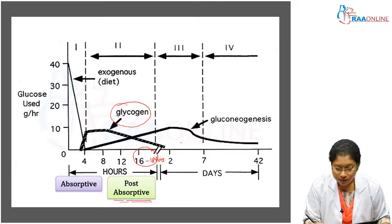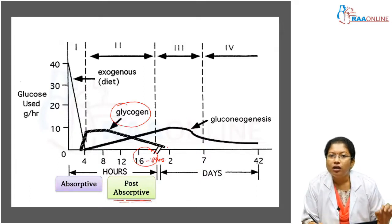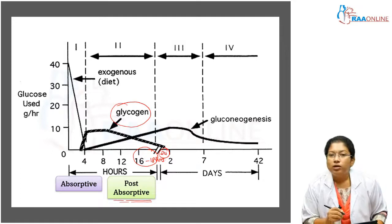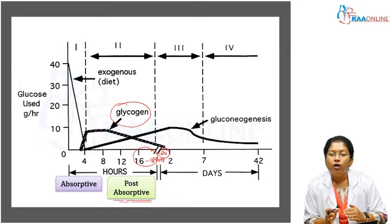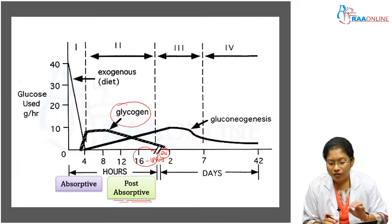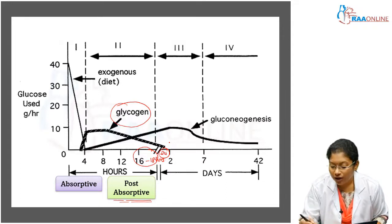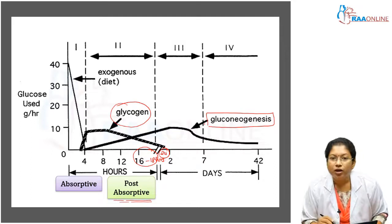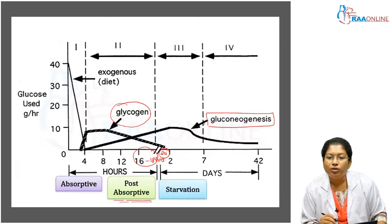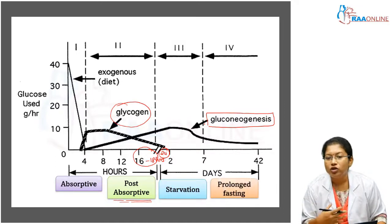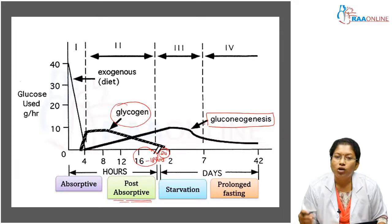The liver glycogen can sustain blood glucose for 16 to 18 hours if no meal is taken in between. At around 24 hours, the liver glycogen store is completely depleted. When glycogen stores are depleted, gluconeogenesis takes over. Following the post-absorptive stage, the next stage is called starvation. More than two days is called starvation, and more than seven days is called prolonged fasting or prolonged starvation.